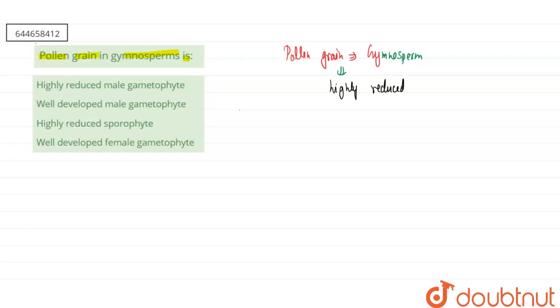And basically here these gametophytes will be dependent upon the sporophyte. Here the dominant phase will be our sporophytic phase.